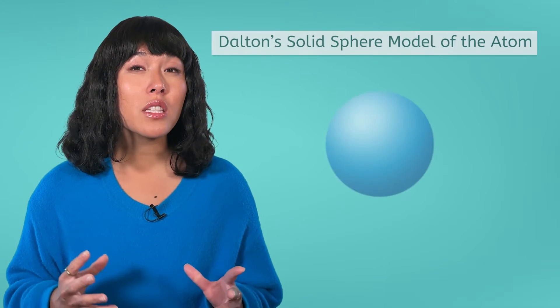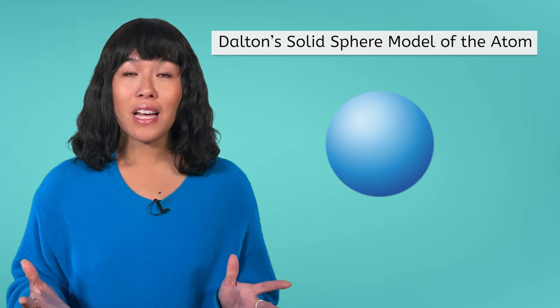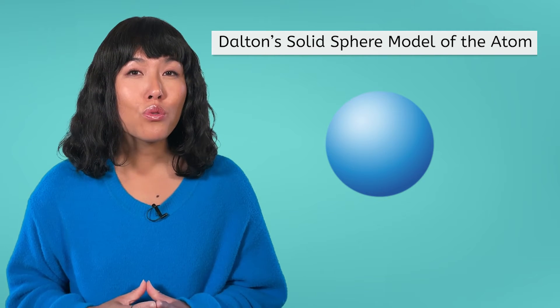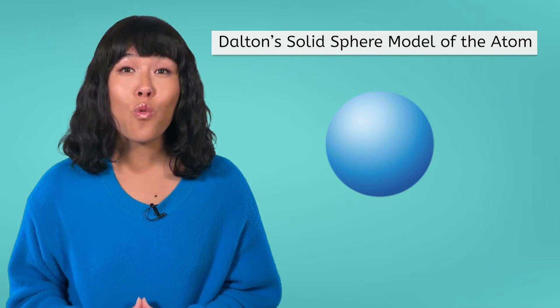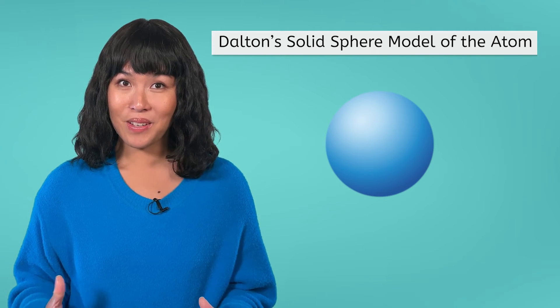At the time of Dalton's theory, the electron, proton, and neutron had not yet been discovered, so he viewed the atom as a solid sphere, like a marble, that is so small that you aren't able to see it.